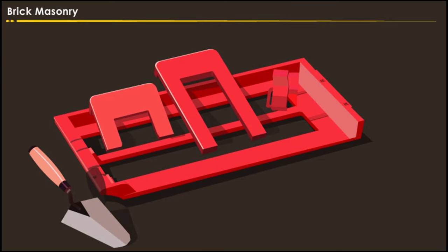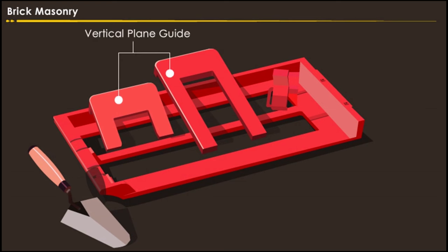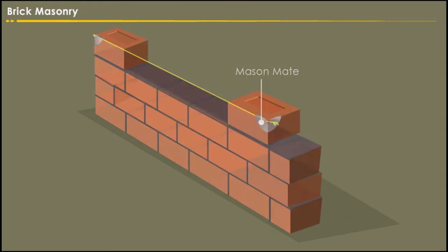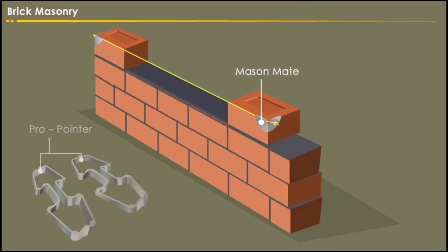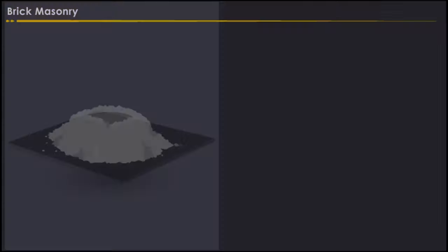Brick laying process can be done perfectly with professional equipment. In the following images shown on the screen, you can see the vertical plane guide, the horizontal plane guide, the mason mate, and the pro pointer.